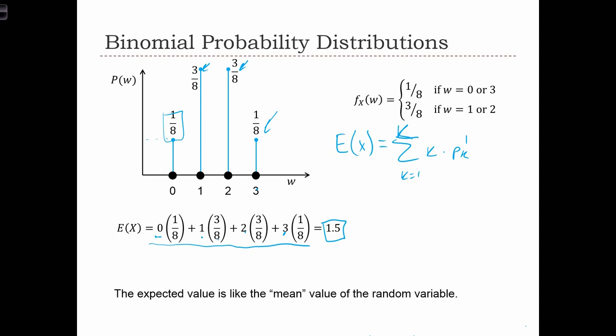When we multiply and add these all together, we find that the expected value is 1.5. So on average, we would expect the average value of this random variable is 1.5.